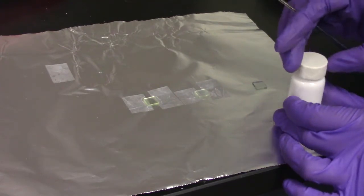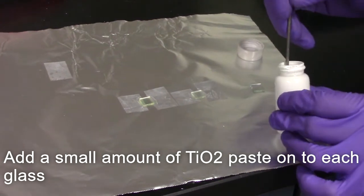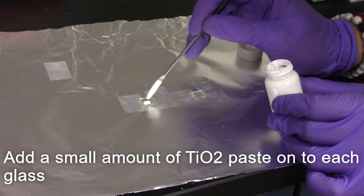Shake the TiO2 paste before every use. After determining that the conductive side is facing up, apply a small amount of the TiO2 paste to each cell.